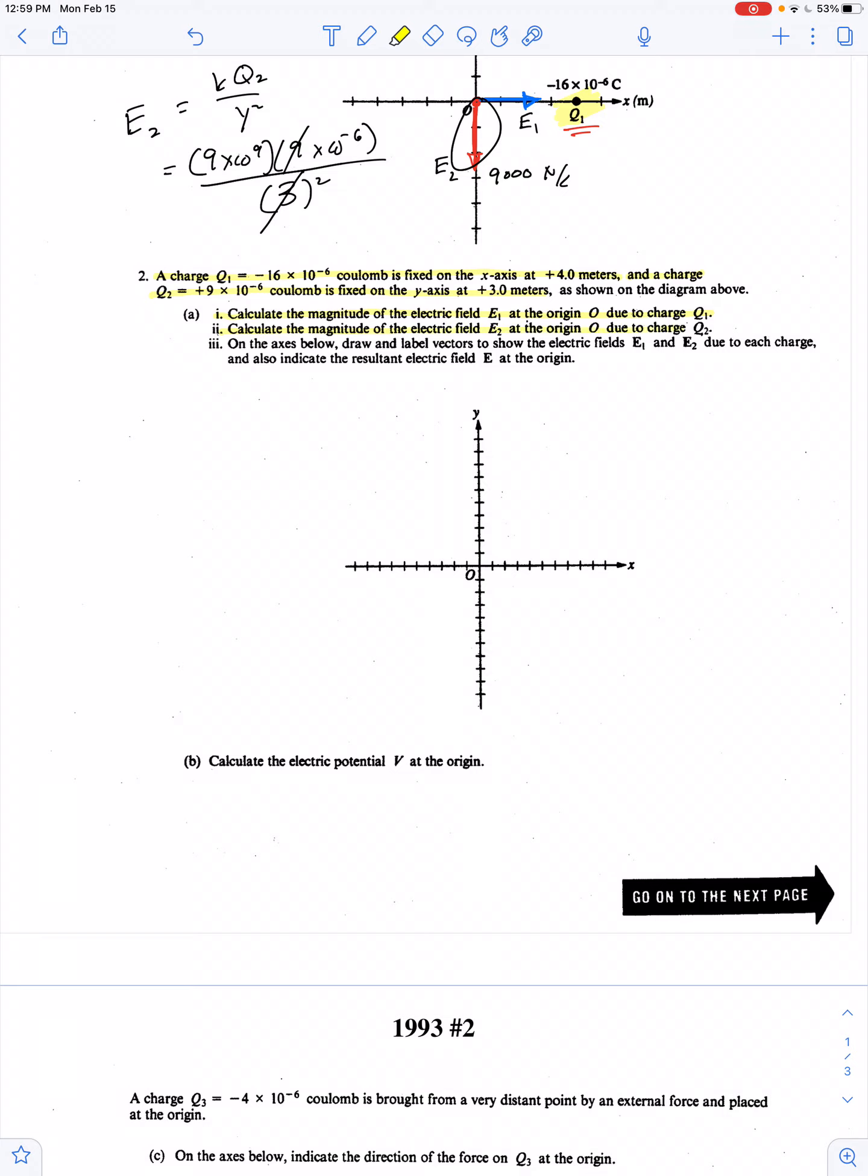So we've calculated each of these individual contributions to the net electric field. So it says on the axes below, draw and label vectors to show these. I already did that on the diagram above, and indicate the resultant electric field. I don't mind copying these again. There's E1. There's E2.